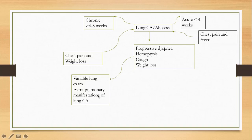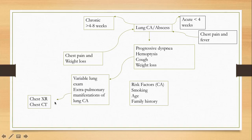On physical exam, lung cancer patients have a variable lung exam and may have some extra-pulmonary manifestations, such as Horner syndrome or paraneoplastic features. Chest X-ray may show a mass, but if it is small, a CT scan will give a clearer picture. Risk factors for lung cancer include smoking, older age, and family history.